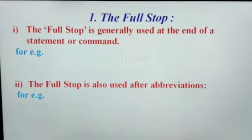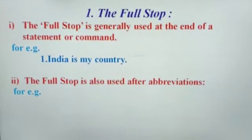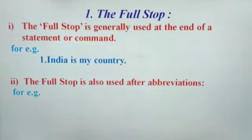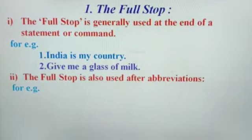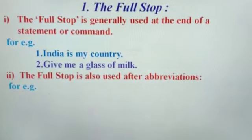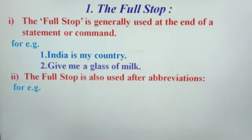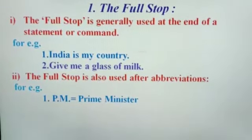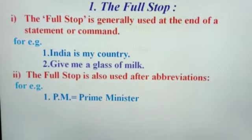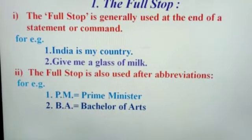For example, 'India is my country.' Here, after 'country' there is a full stop. 'Give me a glass of milk.' Here, after 'milk' there is a full stop. The full stop is also used after abbreviations, for example: p.m. — after p and m there is a full stop; b.a. — after b and a there is a full stop.